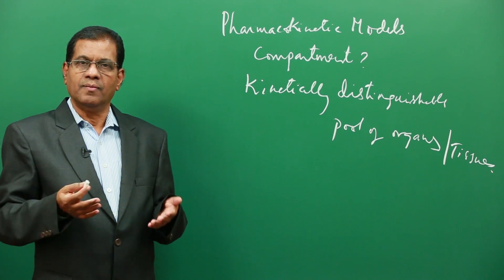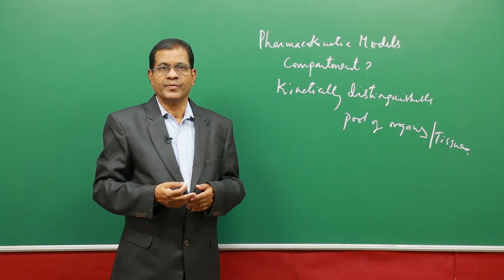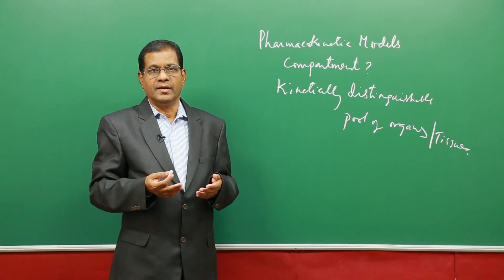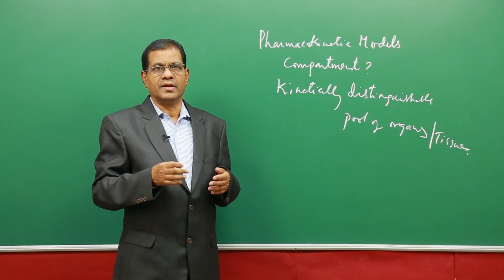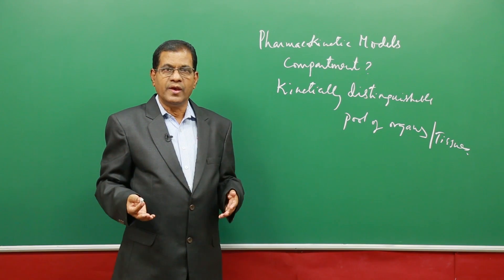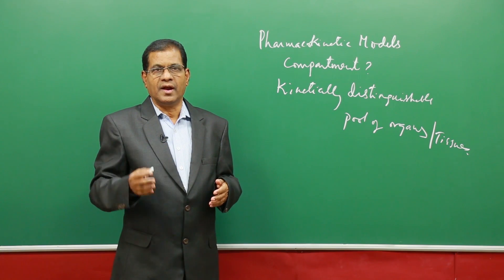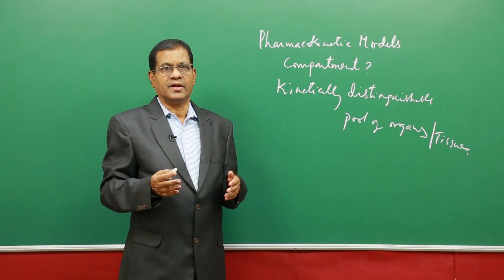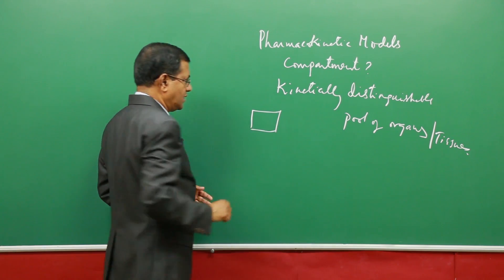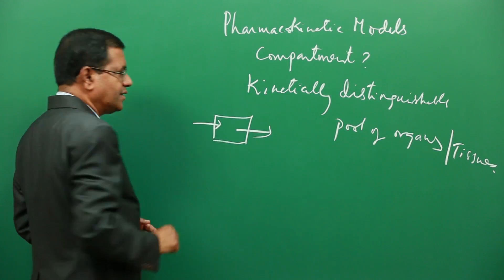From the blood, the drug enters into various tissues. All tissues are supplied with blood vessels, and hence along with the blood, the drug is also transported to various organs and tissues. So various organs and tissues in the body receive the drug and also release it. I represent this as a box — a tissue where the drug is entering and simultaneously leaving.